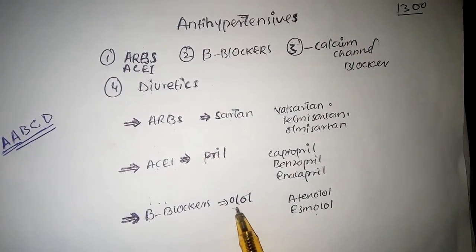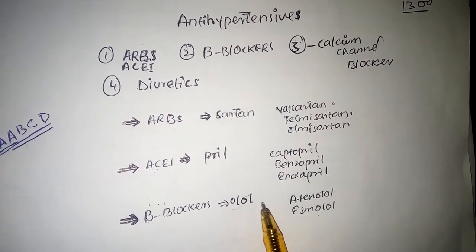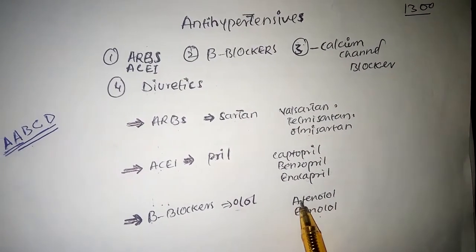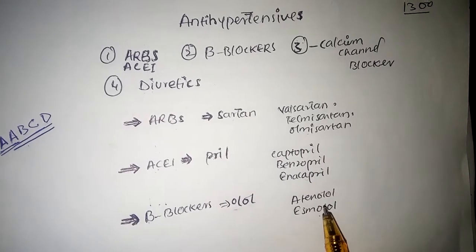If you hear olol at the end of any drug, it belongs to the beta blockers like atenolol, esmolol, metoprolol, and propranolol - these are drugs of the beta blockers.